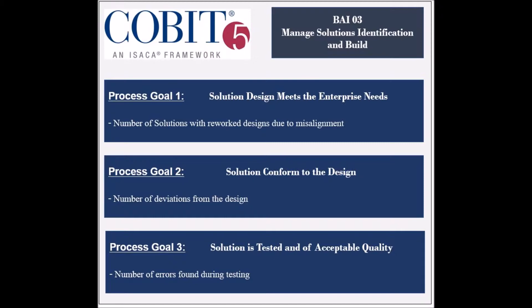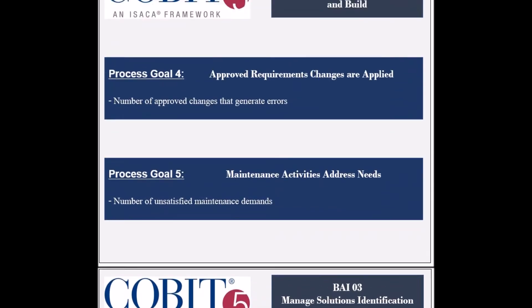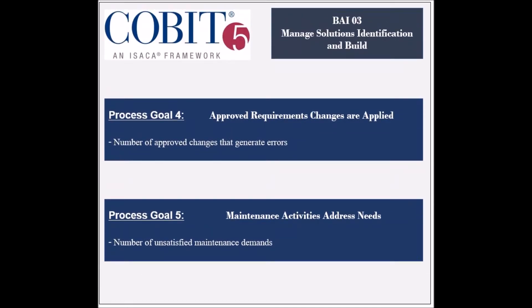The process has five process goals. The second goal is to ensure that the solution conforms to the design and has appropriate controls, and its achievement is measured by the number of deviations from the design. The third goal is to ensure that the quality of the solution is accepted and that it has been successfully tested, and its achievement is measured by the number of errors found during the testing. The fourth goal is to ensure that the approved requirements changes are incorporated into the solution, and its achievement is measured by the number of changes that generate errors.